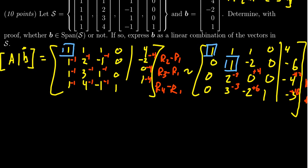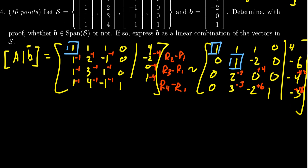And so then I'm going to transcribe that over here. Again, nothing happens to the first row, so just copy down 1, 1, 1, 0, 4. For the second row, we're going to get 0, 1, negative 2, 0, and negative 6.